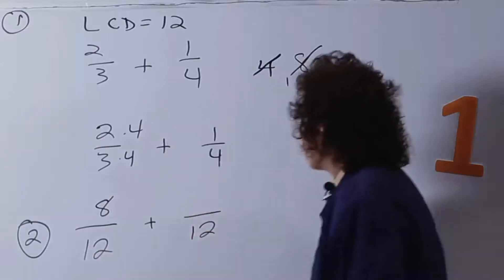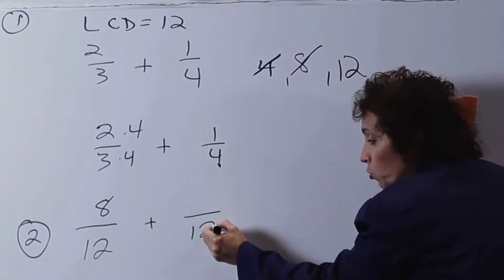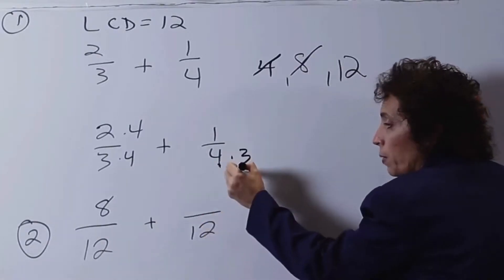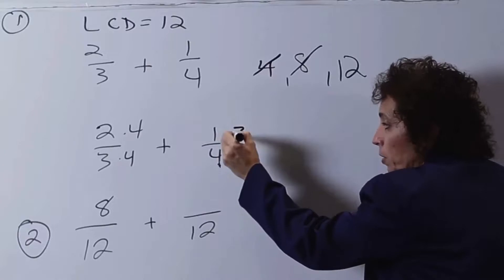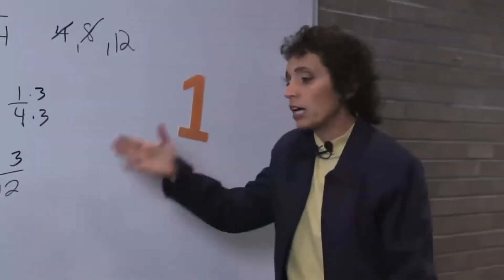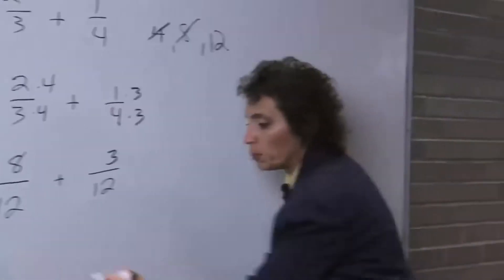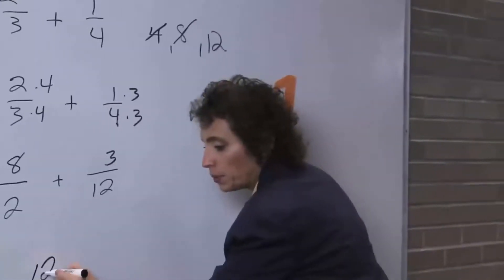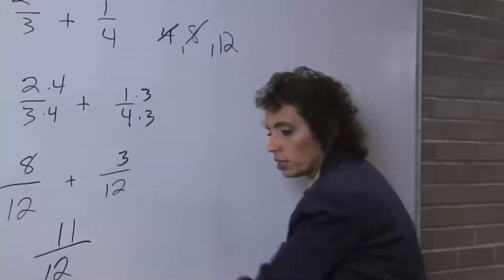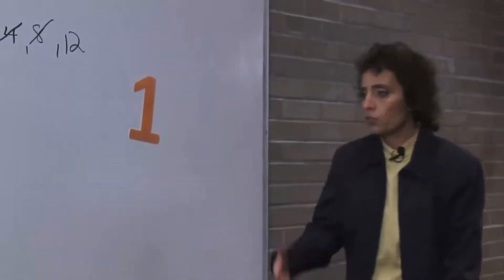2 times 4 is 8. 8 twelfths is the same thing as 2 thirds — looks different, but it's the same thing. Now, 4 — I want fourths to be twelfths. So I'm going to multiply by 3 to get 12. If I multiply the bottom by 3, I'll multiply the top by 3. And now I have a common denominator. Remember, I keep the denominator and combine the numerators. 8 plus 3 is 11. Now I reduce if I can — unfortunately I can't. So I'm done.